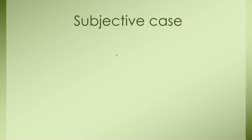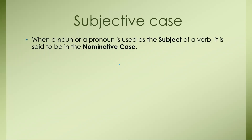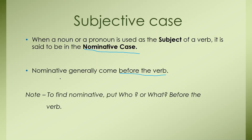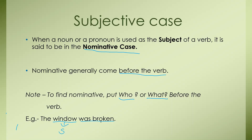Subjective Case. When a noun or a pronoun is used as a subject of a verb, it is said to be in the nominative case. Nominative generally comes before the verb. Note: to find the nominative, ask 'who' or 'what' before the verb. Example: 'The window was broken.' Here, 'window' is the subject as it comes before the verb 'was broken', and when we ask 'what was broken?' we get the answer 'window'.